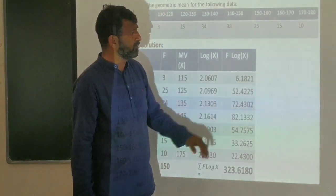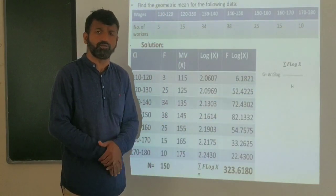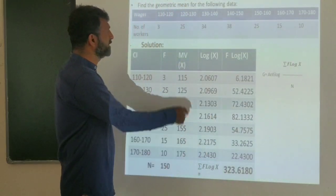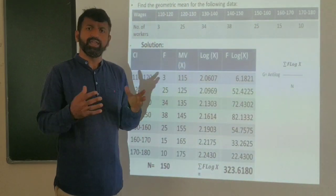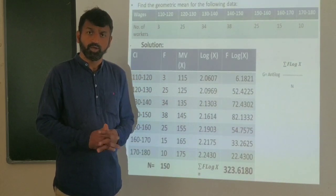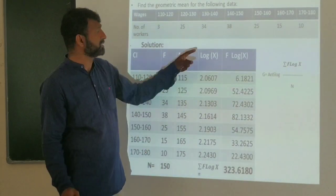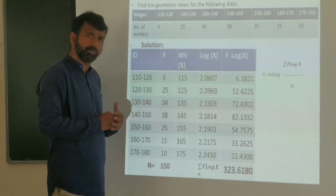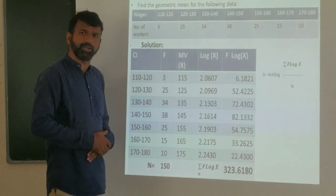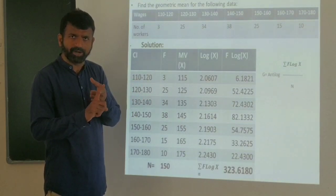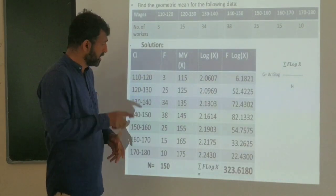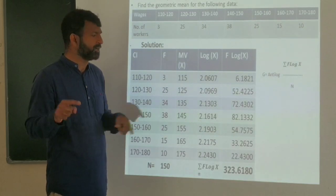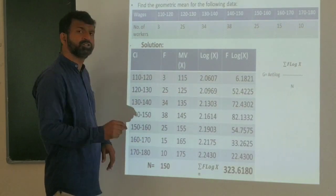Let me write the formula again. G equals antilog of the sum of f times log X divided by N. Since class intervals are given, we need the mid-values. The mid-value is computed as lower limit plus upper limit divided by 2. So for 110–120, the mid-value is 230 divided by 2 equals 115. For 120–130, it is 250 divided by 2 equals 125.